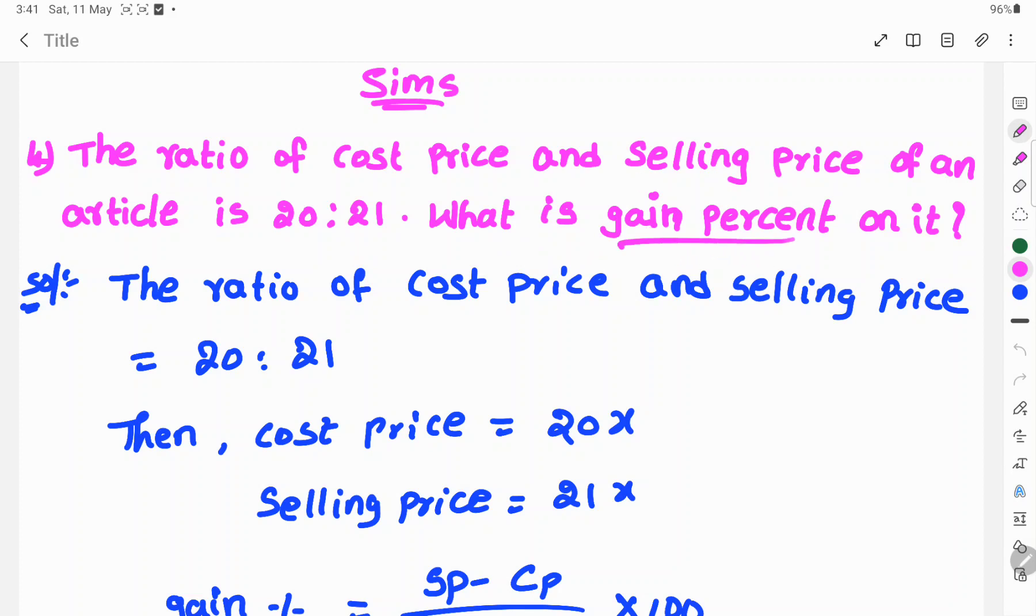Here we need to find the gain percent. Let's see the solution. Given that, what are given? The ratio of cost price and selling price is equal to 20 is to 21.